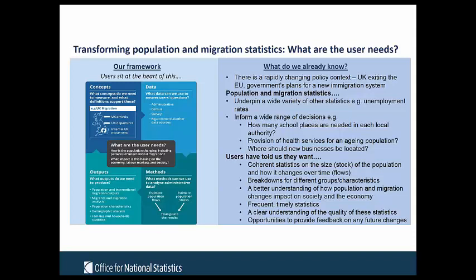One thing we frequently hear is: what more can our statistics say about the impact that population change is having on the economy, labour markets, and society? Once we've thought about user needs, we move to thinking about the concepts and definitions we need to measure — for example, around UK migration and population. Then we consider data sources: administrative data, the census, wider survey sources, or big data. Then we decide what methods to use to analyse them — how we'll estimate population flows and stocks — and what outputs we need to produce.